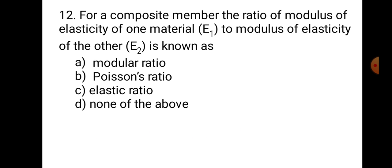Question number 12. For a composite member, the ratio of modulus of elasticity of one material E1 to the modulus of elasticity of other material E2 is known as: A. Modular ratio, B. Poisson's ratio, C. Elastic ratio, D. None of the above. This is the definition of modular ratio (E1 upon E2). Hence, the correct answer is A, Modular ratio.